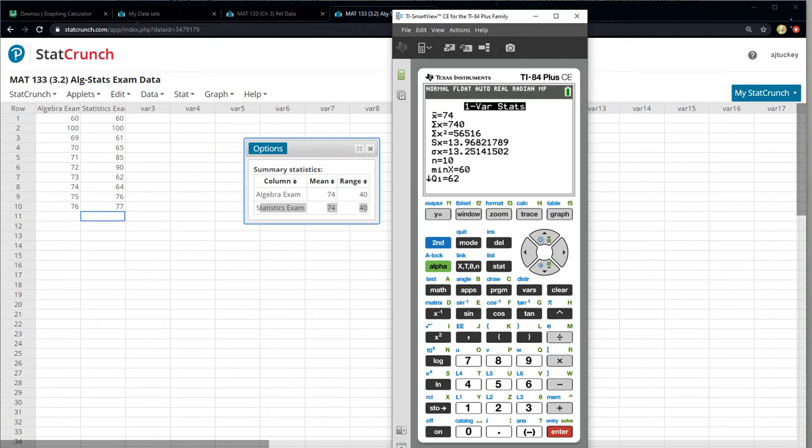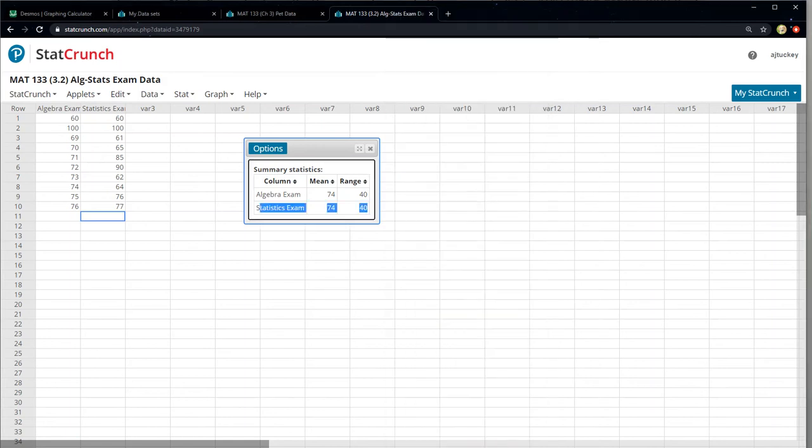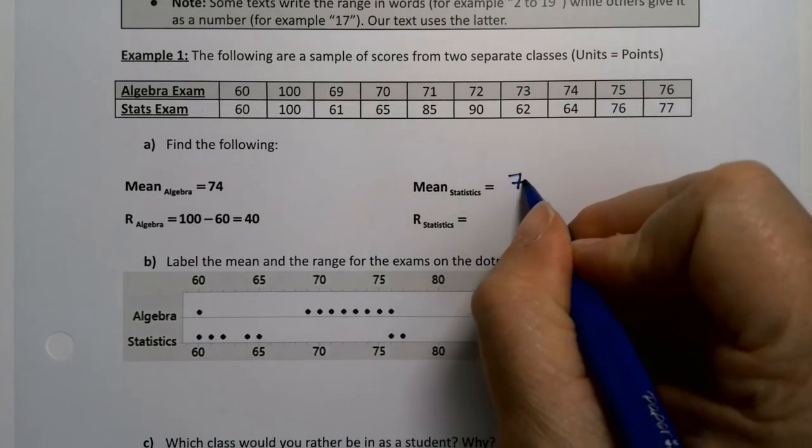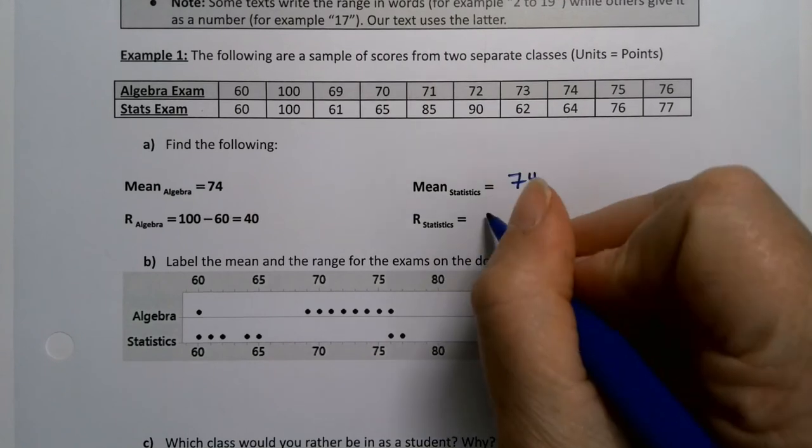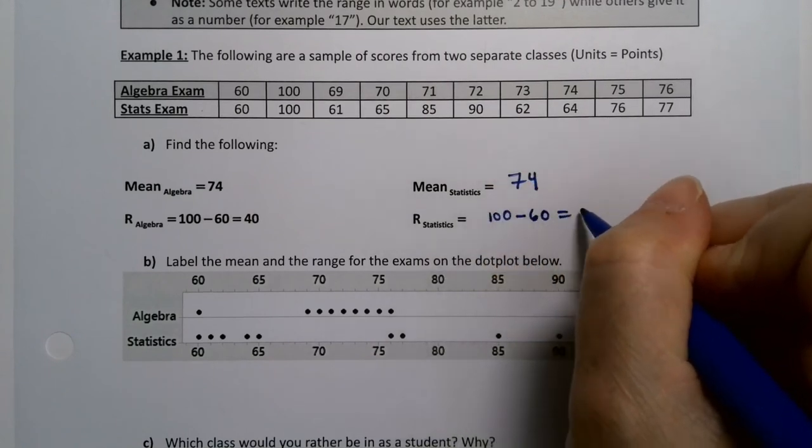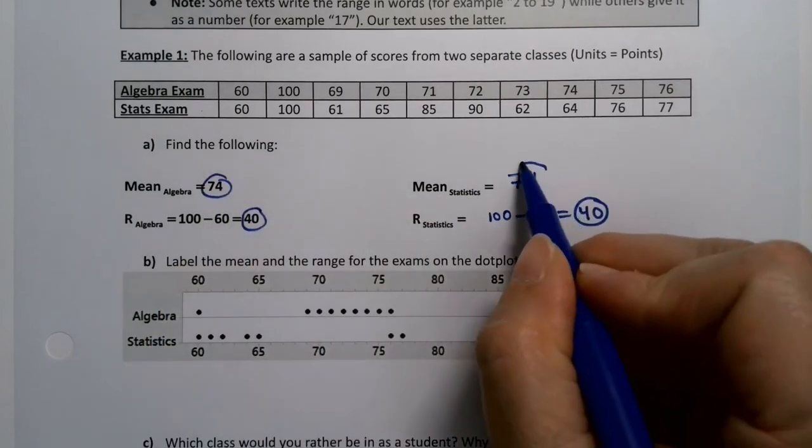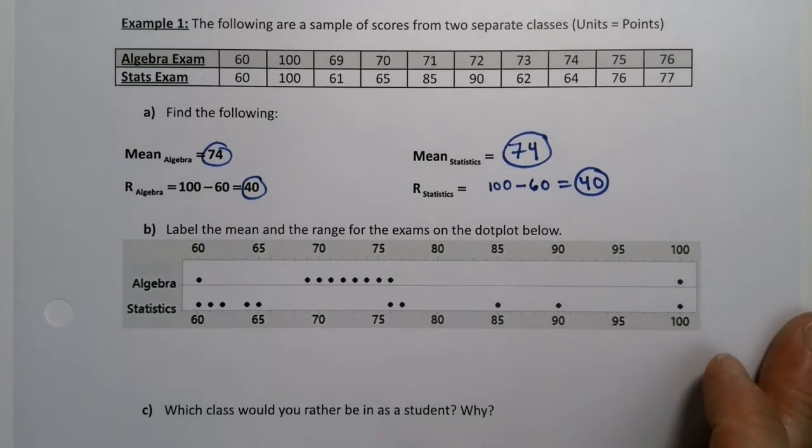And there you can see the mean is 74. The range is the max minus min. And the calculator does not find range the way StatCrunch does. But it does tell you the max is 100 and the min is 60. So you can do the calculation yourself from the calculator. So one way or another, either with StatCrunch or with the calculator, we know that this number is 74 and this number is 100 take away 60, which is 40.